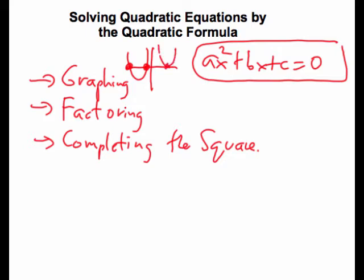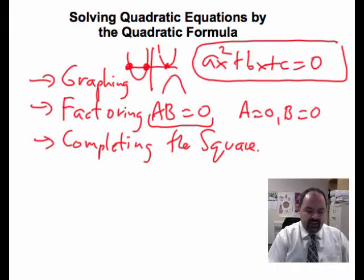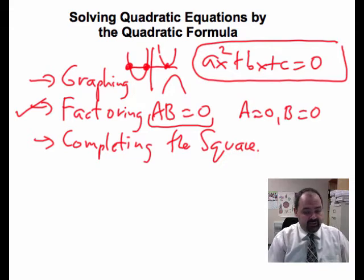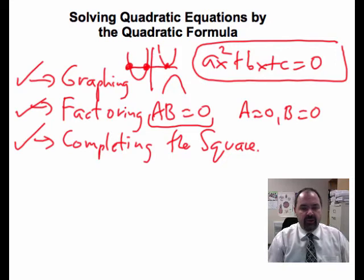There could be one solution, and if the graph doesn't touch the axis, there could be no solutions. The factoring method involves factoring the expression when it's set to zero. If two things or more equal zero, we know each of those individual things would equal zero, so a would be zero or b would be zero. The factoring method is a nice algebraic way to solve a quadratic equation, as long as the expression can factor — because the expression can't always factor, which is when we go to the completing the square method.